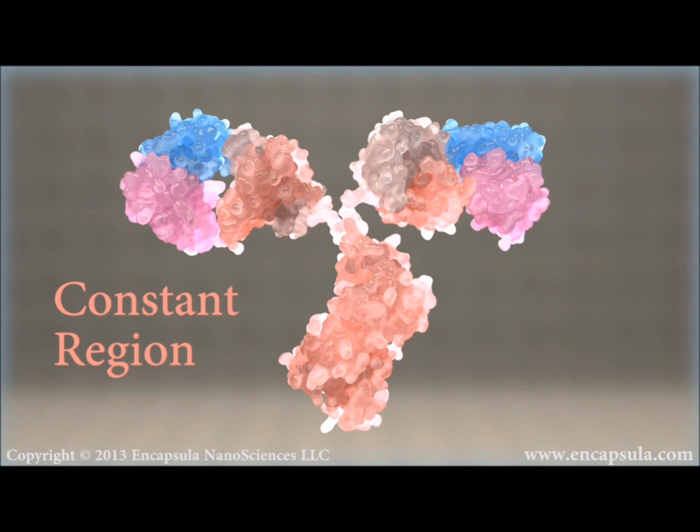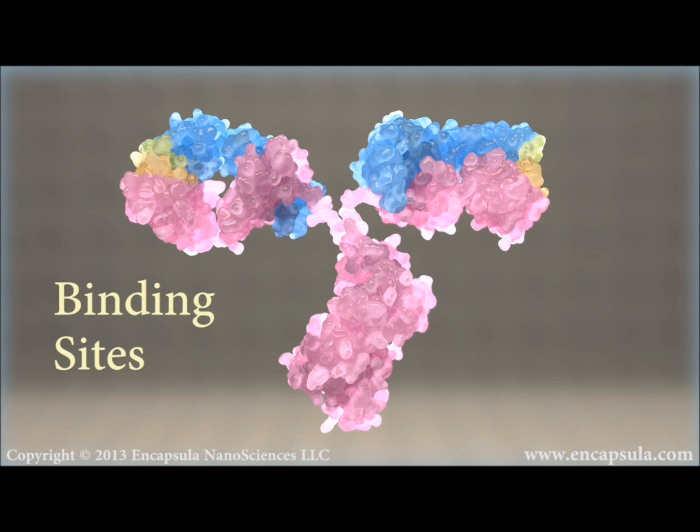The constant region is identical in antibodies of the same isotype but differs in antibodies of different isotypes. The tips of each Y-arm are known as the variable regions and are antigen-binding sites. Each antibody has to have a specific shape in its variable region in order to bind and identify its antigen.